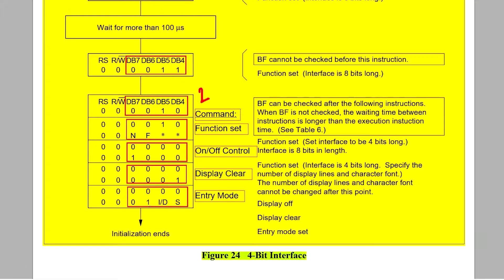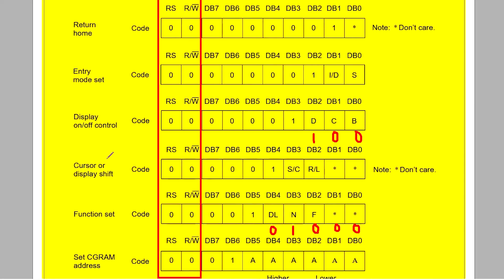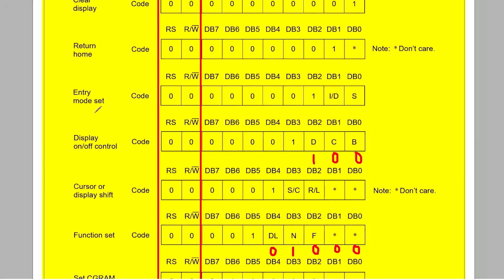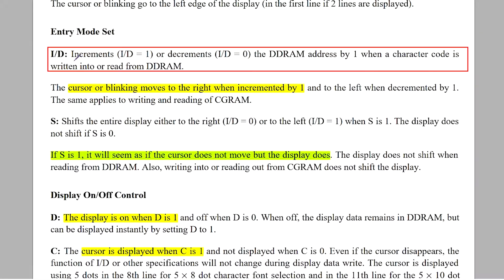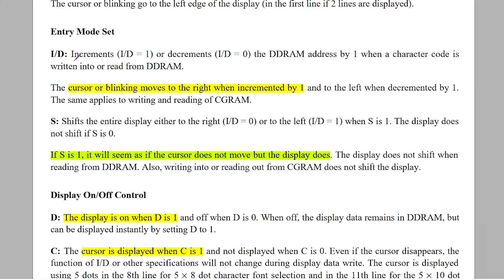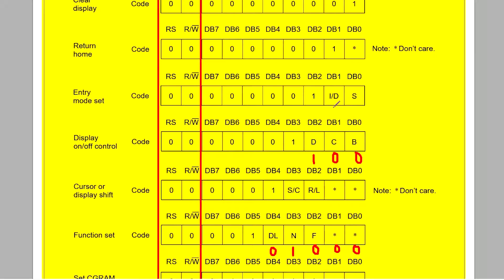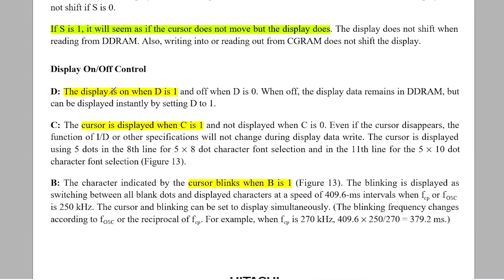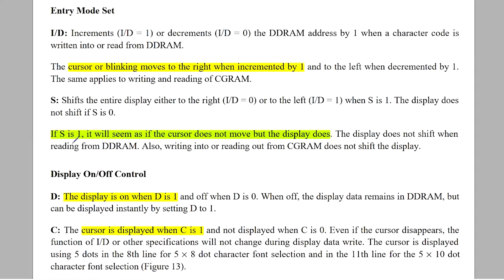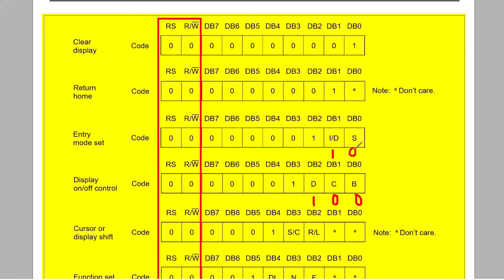The last command for the initialization process is the entry mode set. Inside this command we have to decide two bits: I/D and S. About I/D: if I/D equals 1, the cursor will shift right every time we write a character; conversely, I/D equals 0 makes the cursor shift left. We want right shift, so I/D equals 1. S equals 1 will shift the display instead of the cursor — meaning when a new character is written, all other characters on the display will shift to make room. We don't want this, so S equals 0.